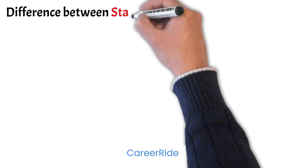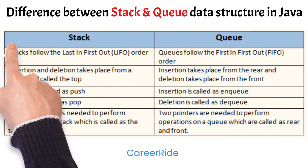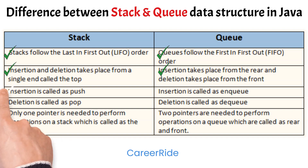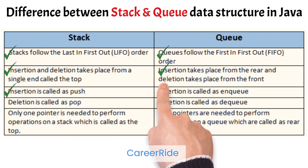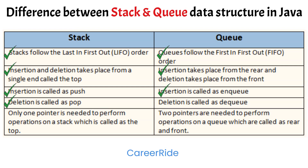Now the differences between stack and queue: stacks follow last-in-first-out order, whereas queues follow first-in-first-out order. In a stack, insertion and deletion take place from a single end called the top, whereas in a queue, insertion takes place from the rear and deletion takes place from the front. In a stack, insertion is called push, whereas in a queue it is called enqueue. In a stack, deletion is called pop, whereas in a queue it is called dequeue.